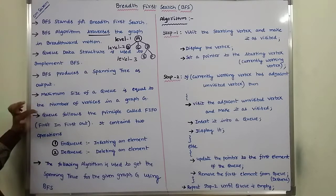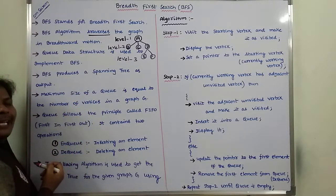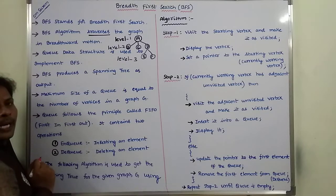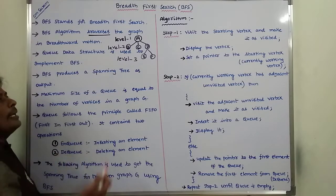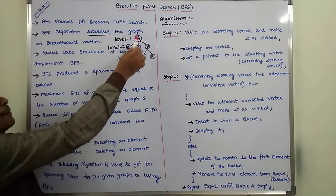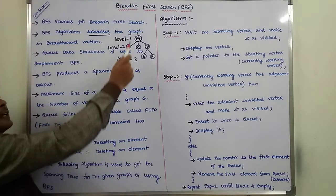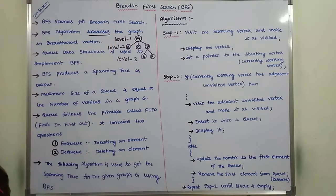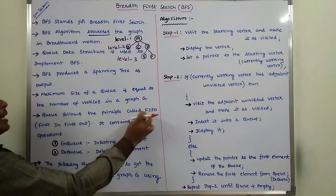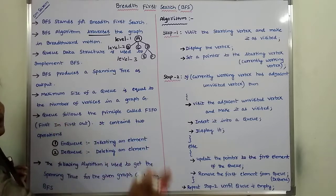The maximum size of a queue is equal to the number of vertices in a given graph. To implement the BFS technique, we use a queue data structure, and the size of the queue is determined by the number of vertices. For example, this graph has 6 vertices, so we take a queue of size 6. The queue follows the First In First Out principle — whichever element enters the queue first is taken from the queue first.